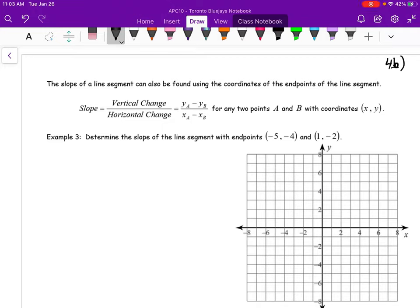The slope of a line segment can also be found using the coordinates of the endpoints of the line segment. The slope is a vertical change over the horizontal change.